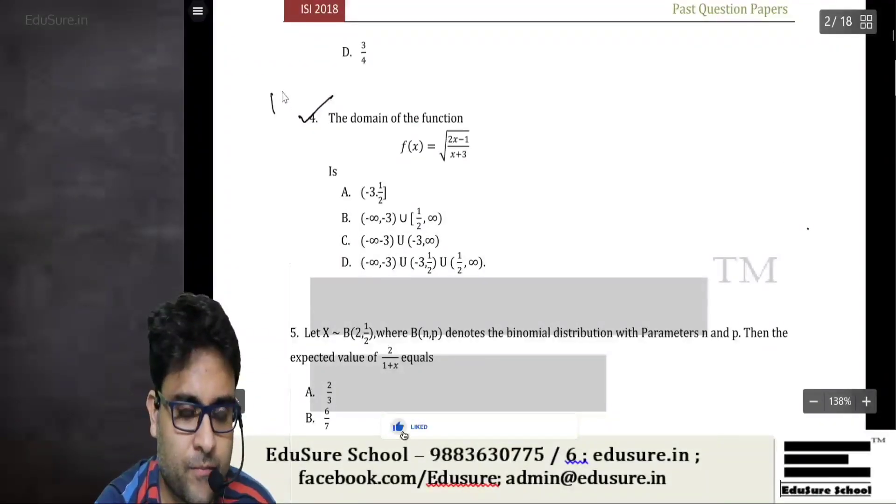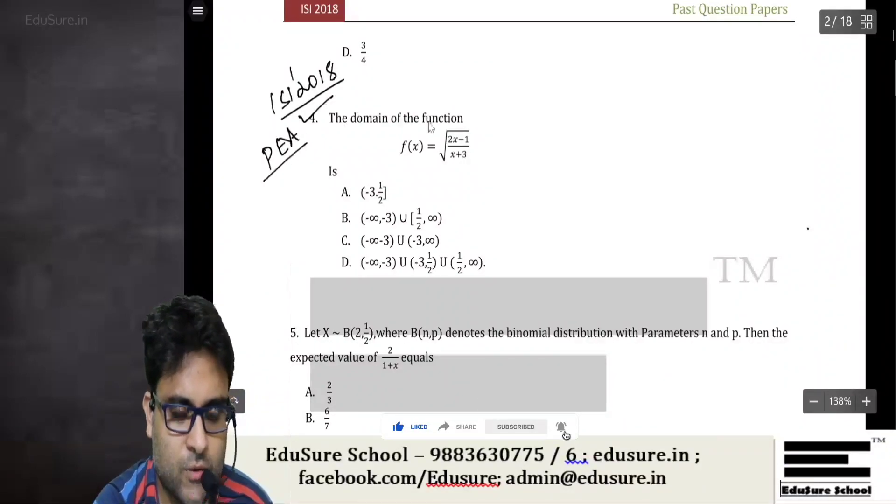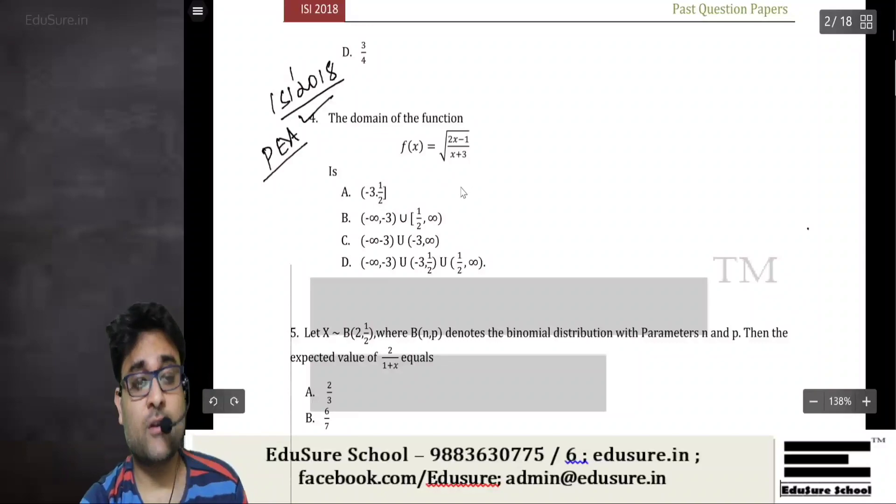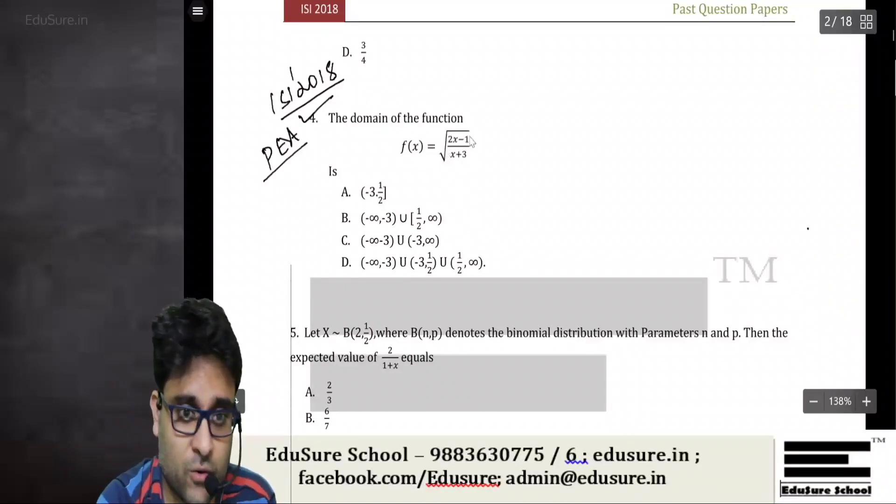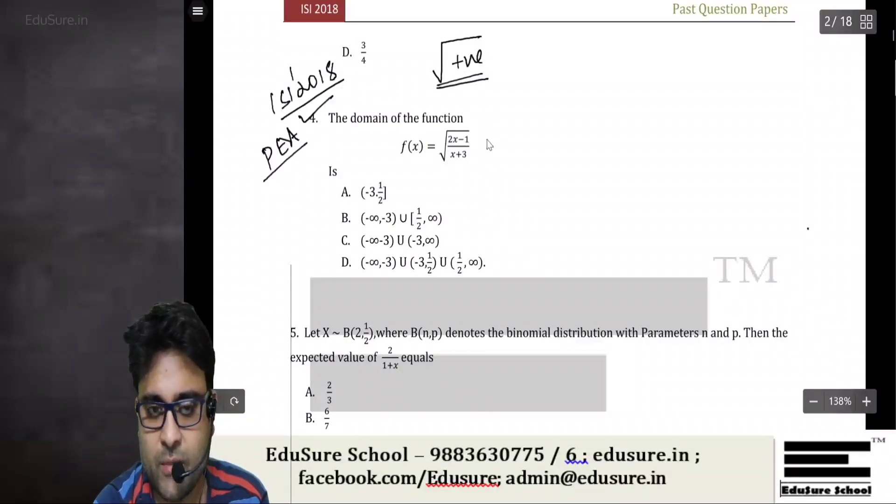Okay, so now we take a look at ISI 2018 PEA question number 4. We need to find out the domain of the function f(x) = √((2x-1)/(x+3)). We need to understand that under the root I can only have a positive quantity. Now this will be a positive quantity only if the numerator and the denominator are of the same sign - both are either positive or both are negative.